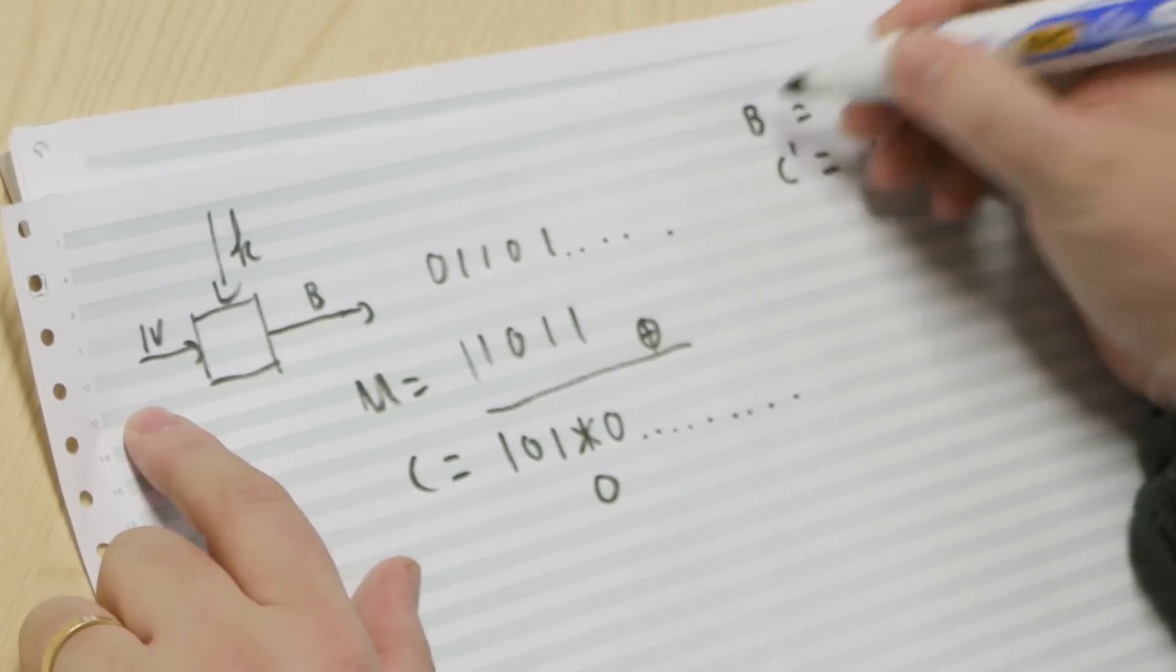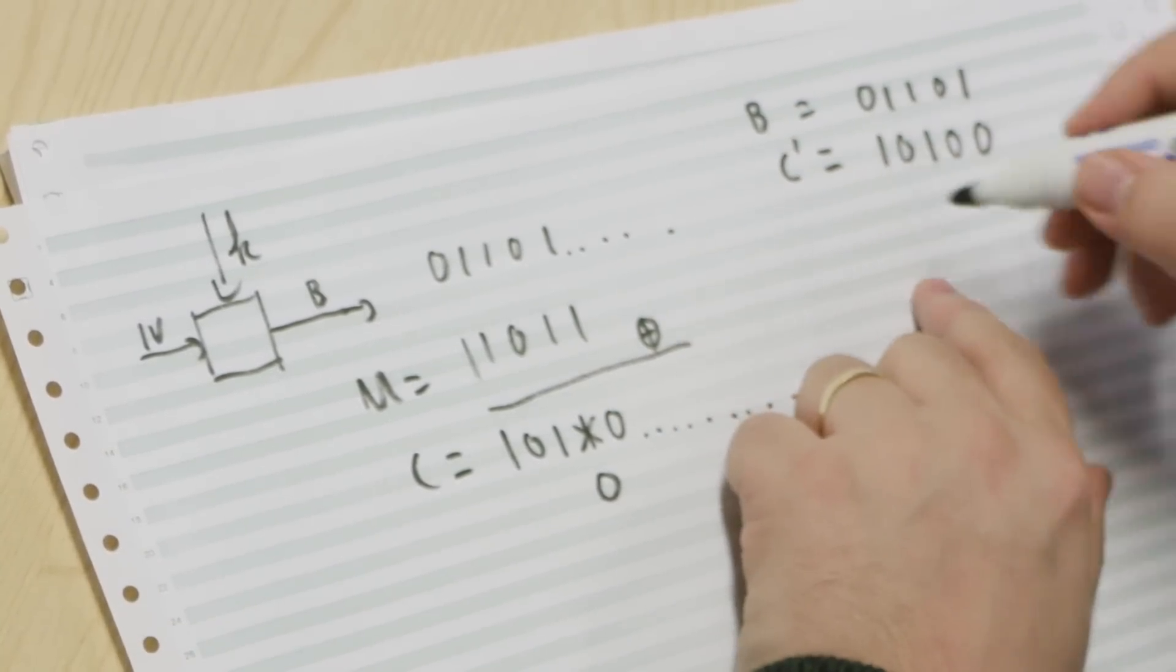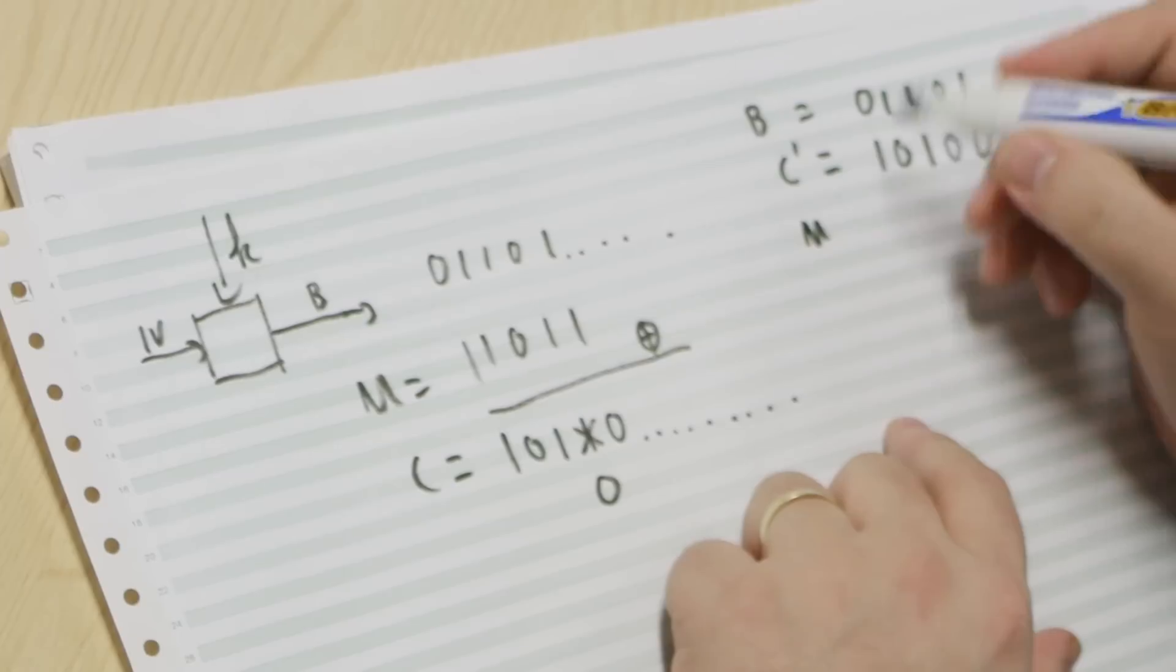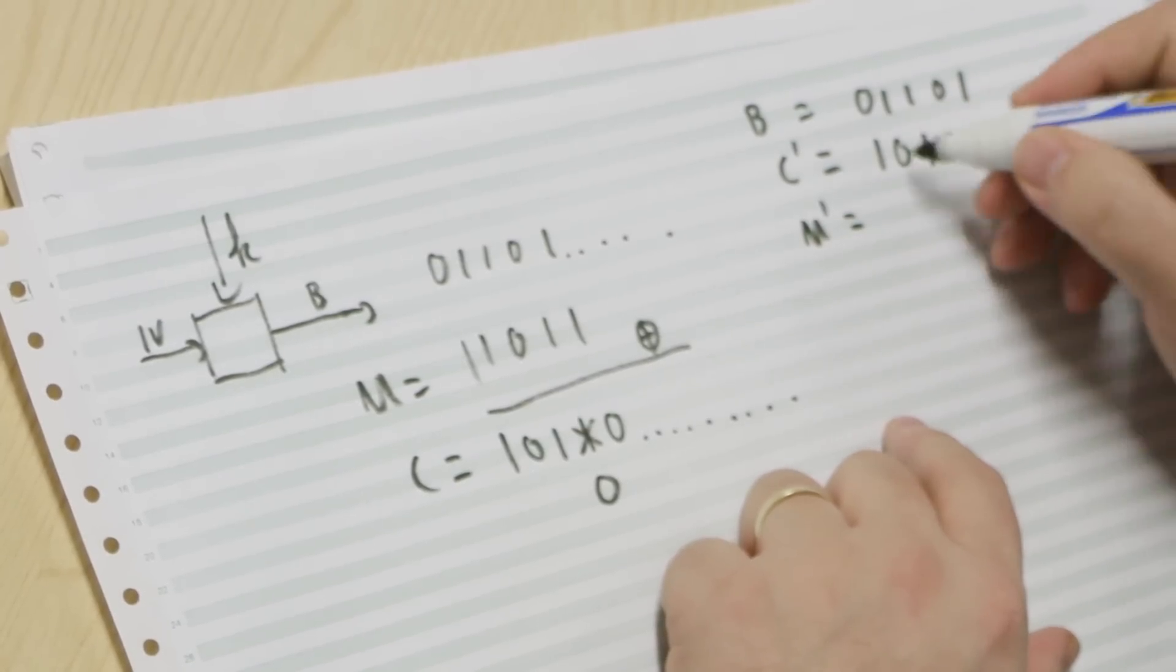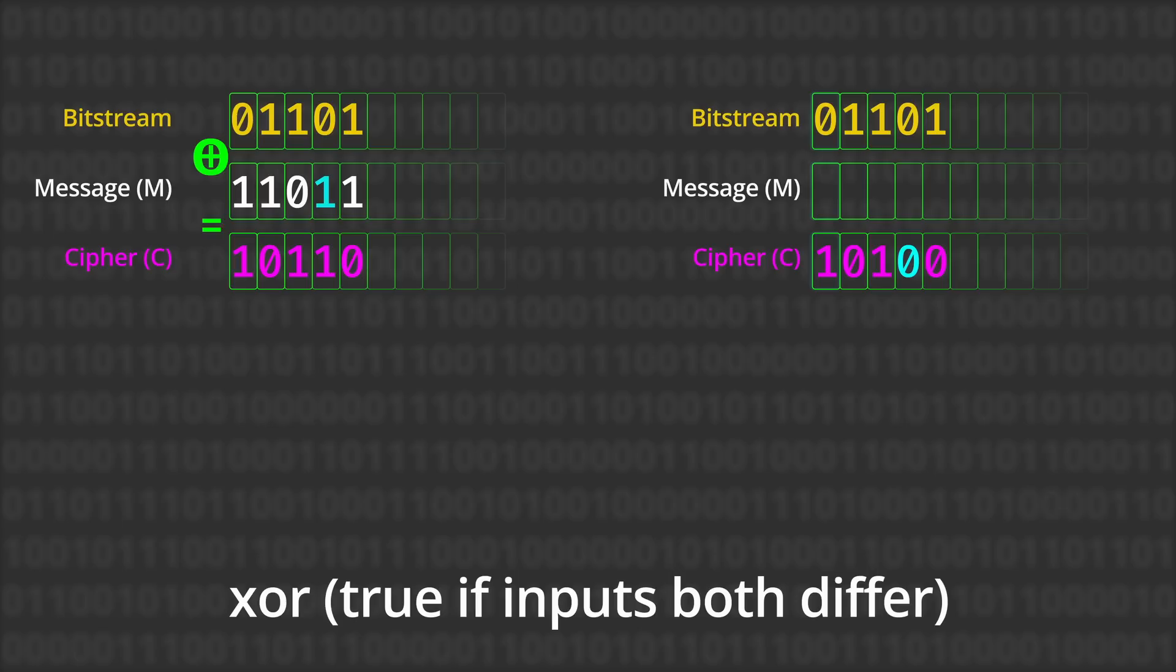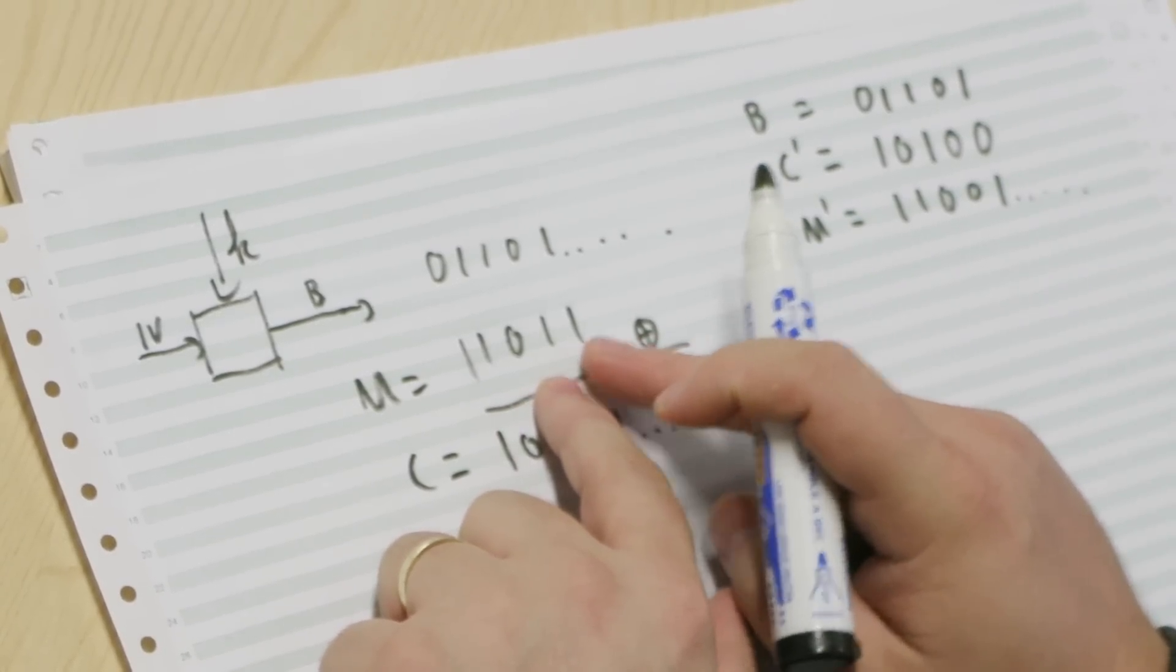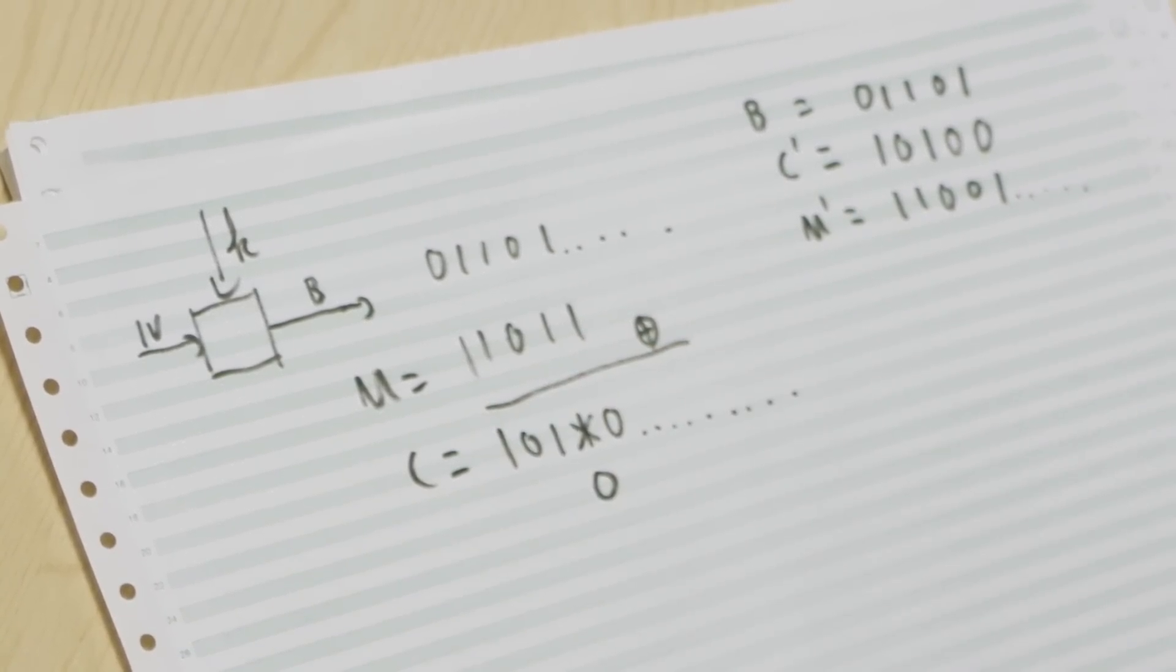But when you XOR these two things, you will get the changed message, the modified message, which will be 1 1 0 0 1. And as you can see, the resulting message m prime differs in exactly the bit that we have swapped in the ciphertext.